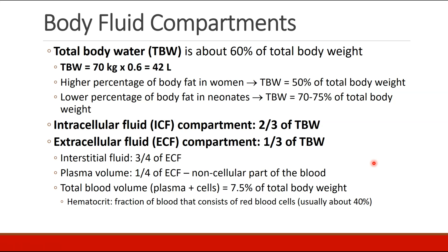The human body is made primarily of water, and total body water constitutes about 60% of total body weight. For example, if somebody weighs 70 kilograms, 60% of that is about 42 liters of water throughout the body.